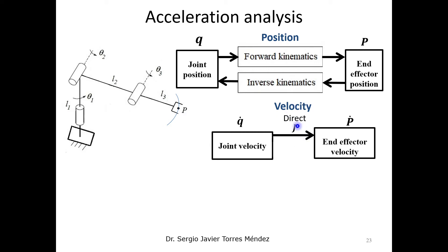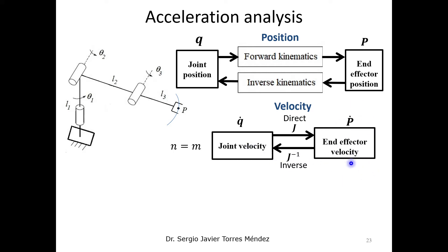For velocity, we need to relate the joint velocities with the end-effector velocities. We have the direct velocity using the Jacobian matrix, which maps the joint velocities to the end-effector velocities. For the inverse velocity, we need to use the inverse Jacobian matrix, if and only if we have the same number for n and m — that is, the same degrees of freedom as the end-effector coordinates. In this case, it is possible to obtain the joint velocities given the end-effector velocities.